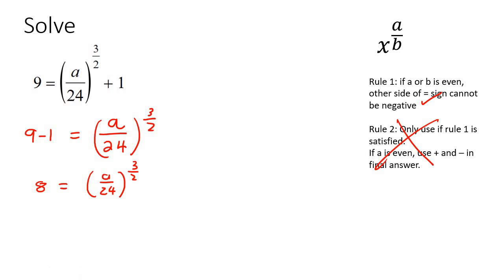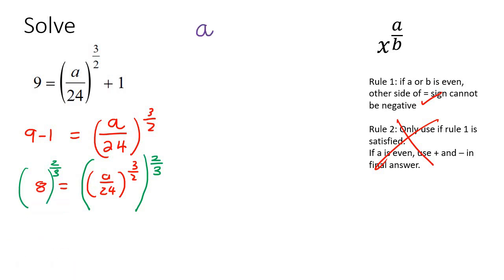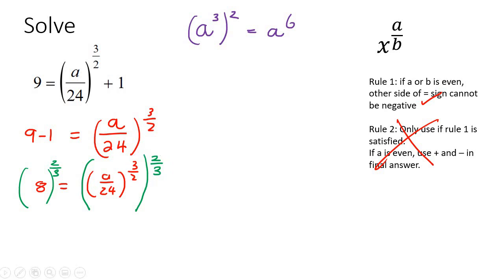To get rid of the fractional exponent, put a bracket on both sides and use the reciprocal — the flipped version of the fraction. Using exponent rules, when you multiply the original exponent by its reciprocal, you get one, which effectively removes the exponent. So on the left you're just left with x, and on the right you have 8 to the reciprocal power. On the right-hand side we end up with 8 to the two over three, and on the left just 24 times a.